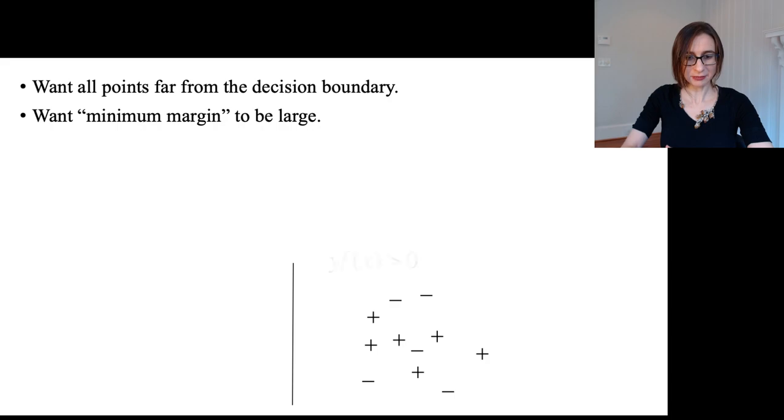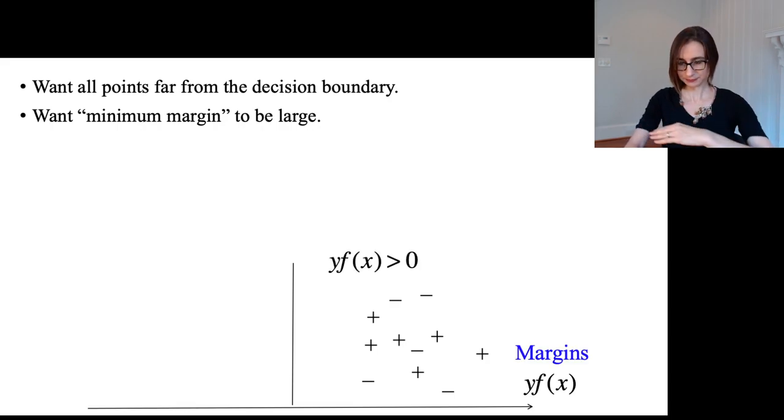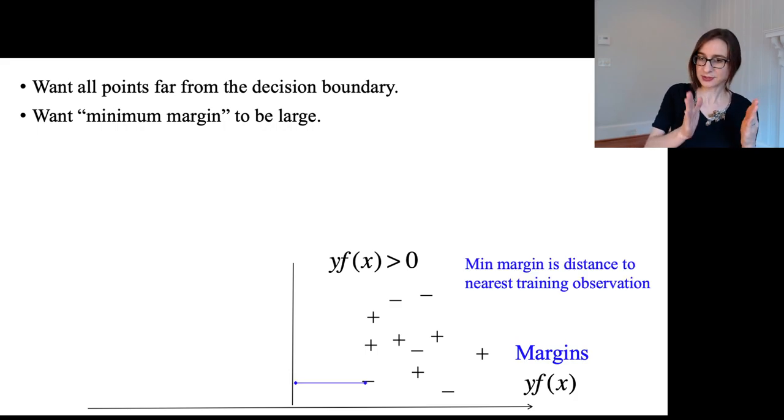Let me show you the margin perspective here. I'm just plotting all the points with respect to the margin along this axis here. As you can see, I've chosen a decision boundary really well so that all the points have margins that are more than some amount. All the points have this really large margin between the decision boundary and the points. Now the minimum margin is the distance from the decision boundary to the nearest training observation. So we call that gamma.